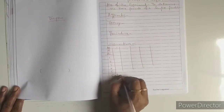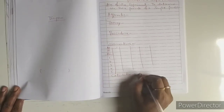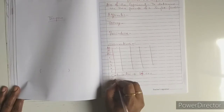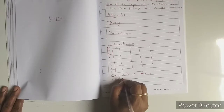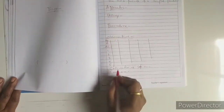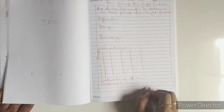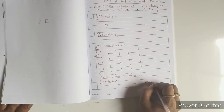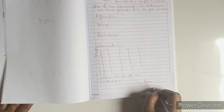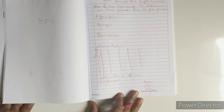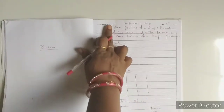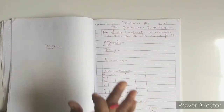After observations, if there is any calculation part, do the calculations. Then write the Conclusion. After each experiment, you must mention your name, class, section, and roll number. This is compulsory — it's written after each experiment, not on each page.